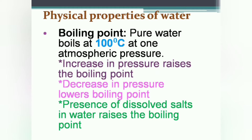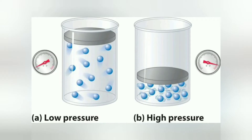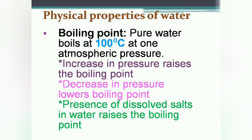Increase in pressure raises the boiling point and decrease in pressure lowers the boiling point of water. To boil water means to convert it from liquid state to gaseous state, which can happen only if the molecules of liquid water move far apart from each other. If we increase the pressure, molecules come nearer, intermolecular forces increase, and more heat energy — a higher temperature — is required to break the attraction between molecules. Hence water boils at a temperature higher than 100 degrees Celsius when pressure is increased above one atmosphere.